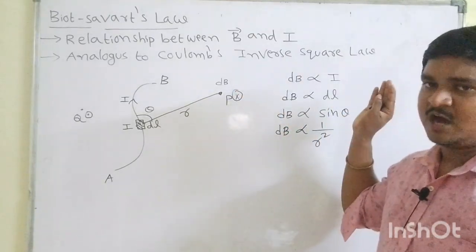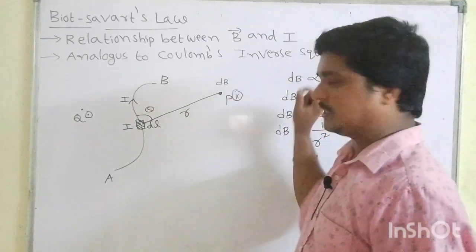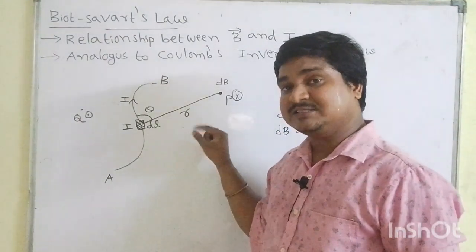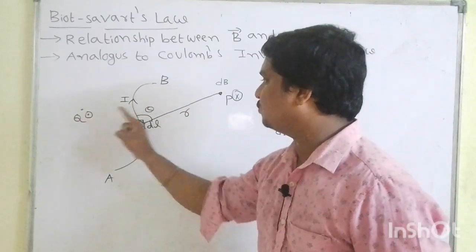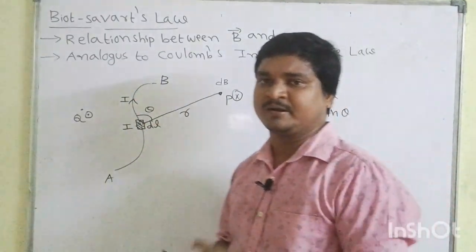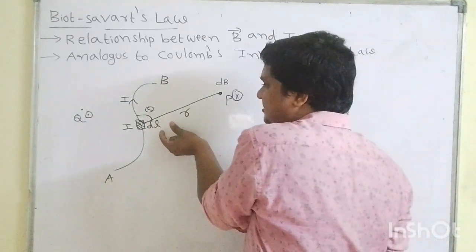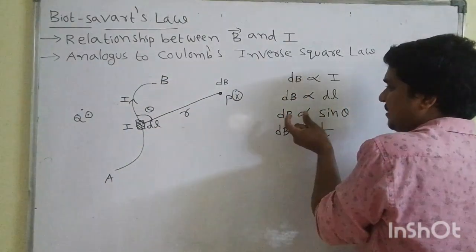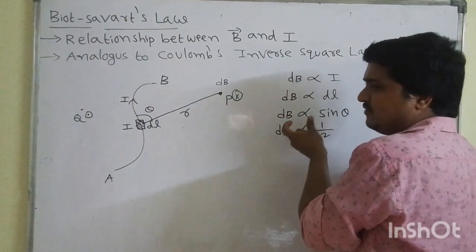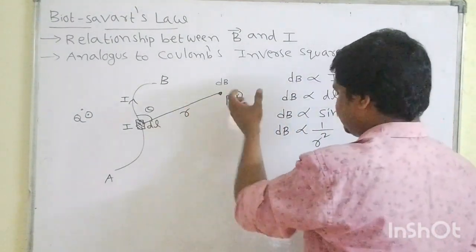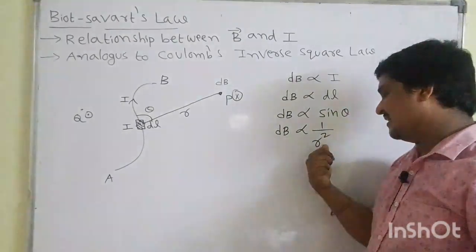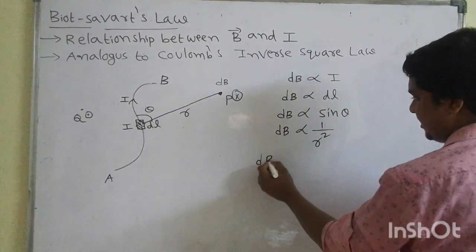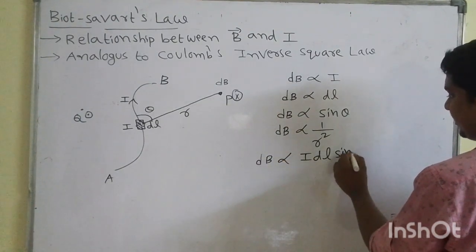Magnetic field is inversely proportional to the square of the distance between the current element and the point. As r distance increases, the magnetic field at P decreases. So from these four relations: dB proportional to IDL sin theta by r squared.